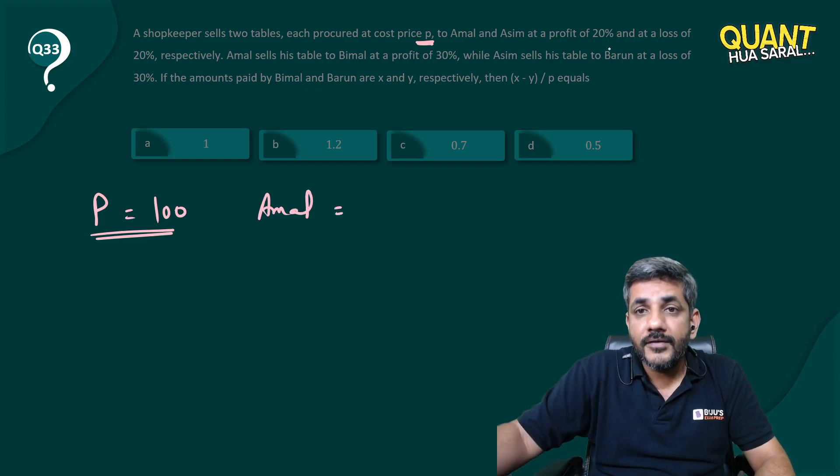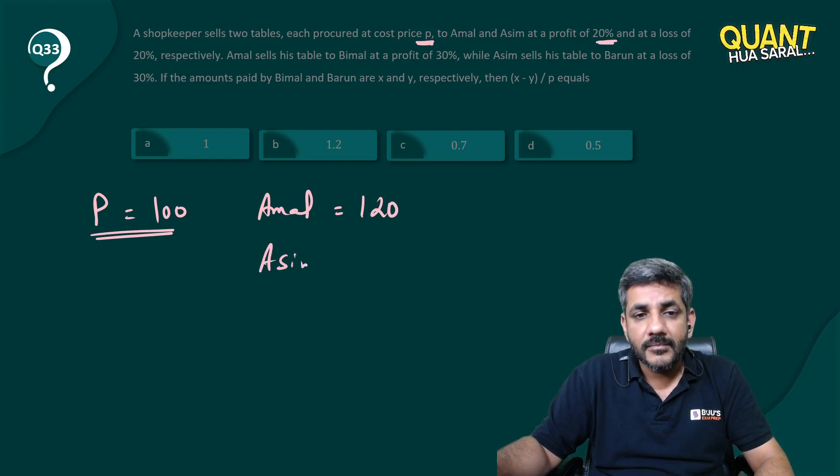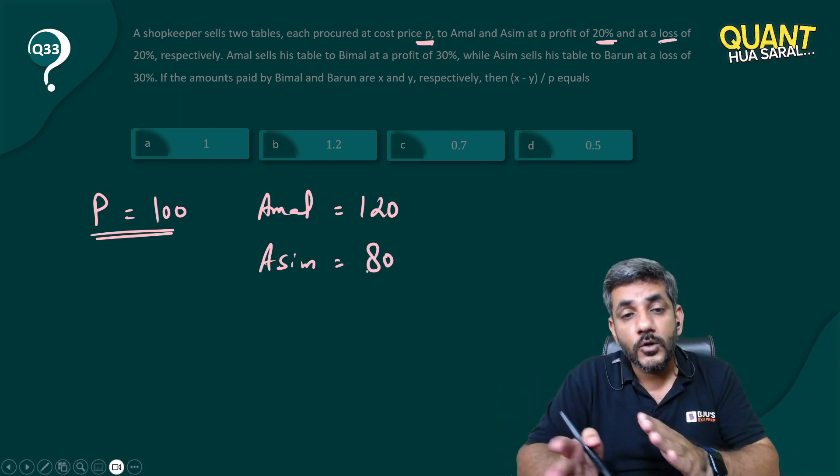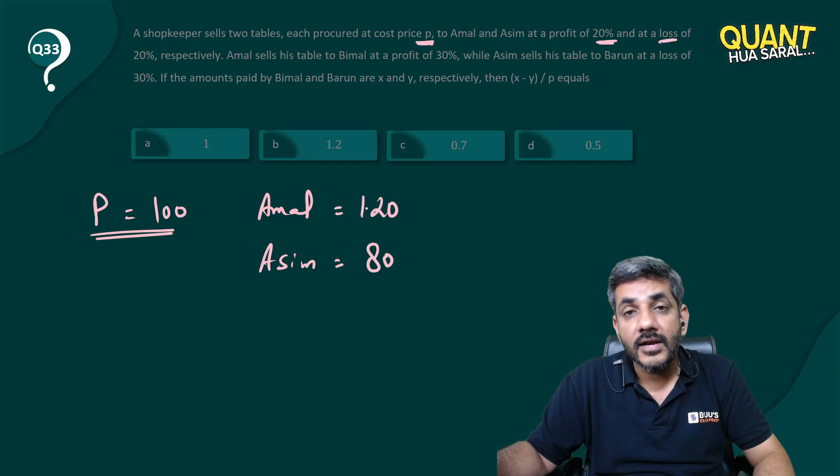at a profit of 20%, that means 120 rupees. He sold it to Asim at a loss of 20%, that means for 80 rupees. So he sold it to Amal for 120 and to Asim for 80.